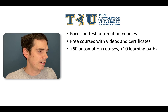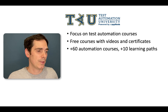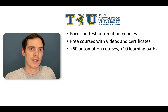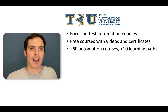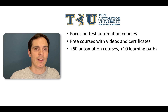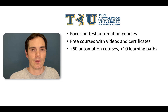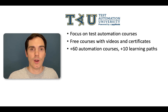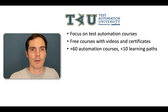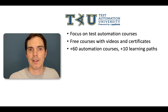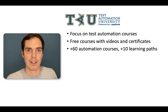They have more than 60 automation courses, and those 60 courses are divided into more than 10 learning paths. So if you decide to learn more about Java, there's a Java learning path. If you decide you want to go with Cypress, there's a Cypress learning path and so forth. Depending on what you would like to learn — and coming back to the beginning of this video — depending on your learning path, skill, and speed, you can pick the right learning path to become a better test automation engineer.